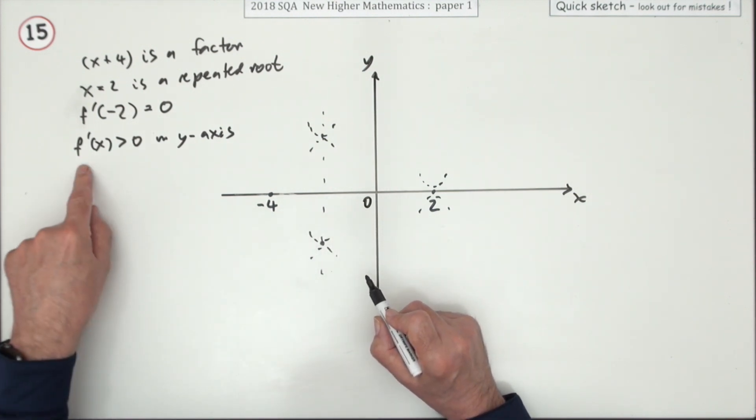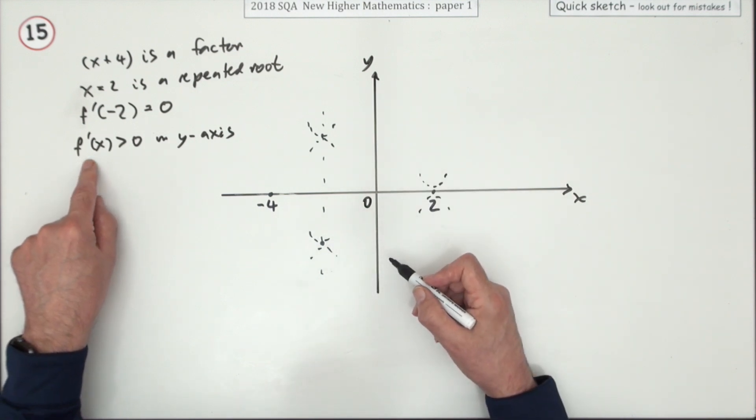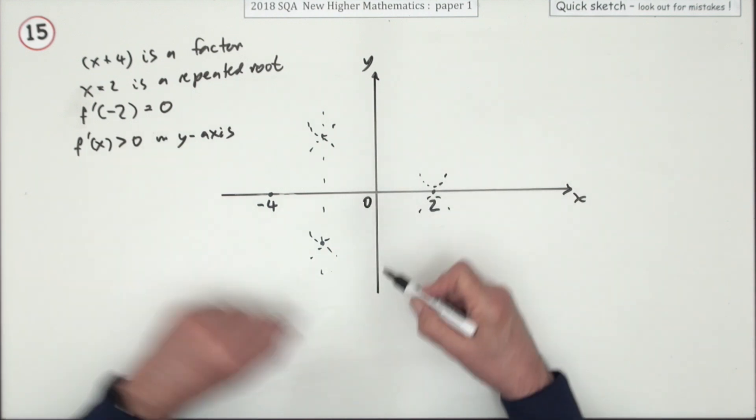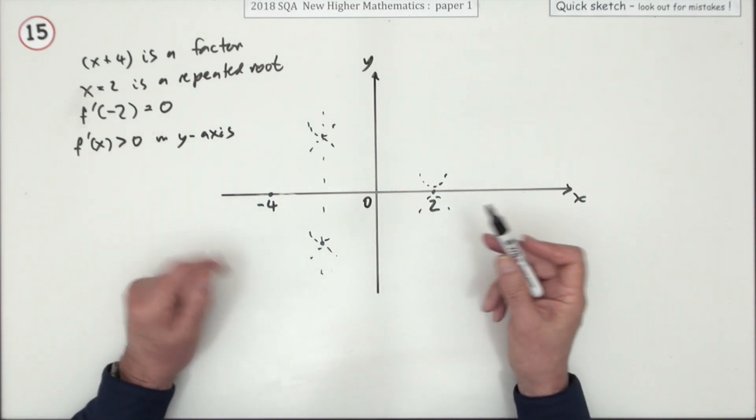Now the last bit of information that should tie this together: f prime of x, that's the gradient of the curve, is positive when it passes through the y-axis.